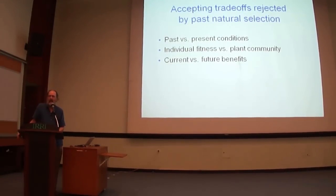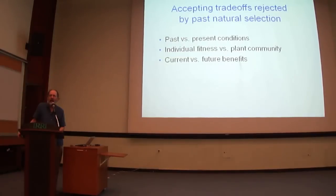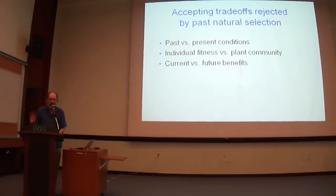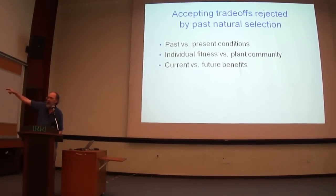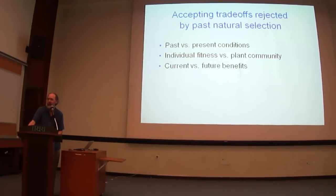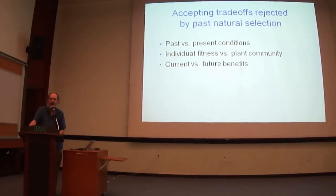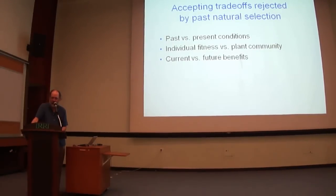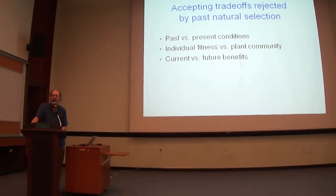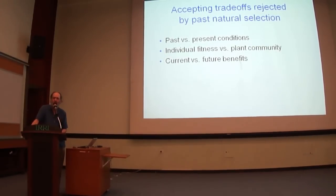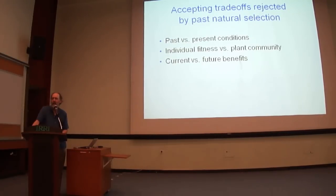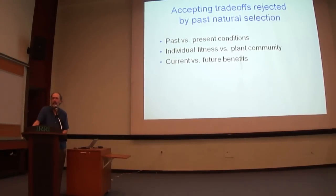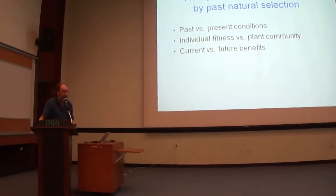Natural selection is like a river flowing downhill. It's not going to flow over a mountain, even though the ocean is over there. It just responds to present conditions, and maybe it'll end up in an inland lake somewhere and never make it to the ocean. But we humans, if we had an opportunity to grow a crop that was going to have substantially beneficial effects on next year's crop, that might be something we would think about — even though natural selection would not have done that.